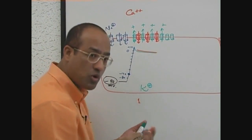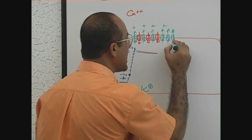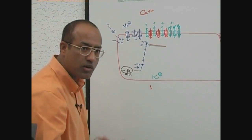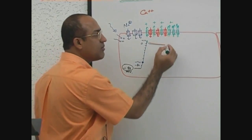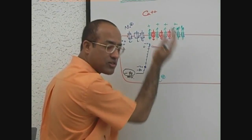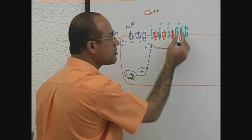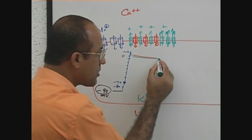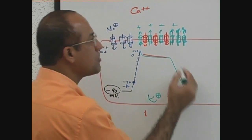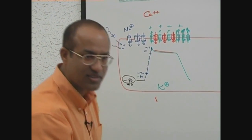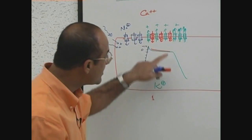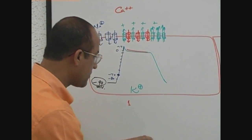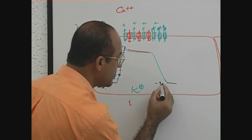Because potassium channels have become more active, potassium losses become very heavy. There is a heavy potassium efflux, and as more and more potassium is going out, more and more positive charges are going out. The cell will start developing electronegativity again because it is losing the positive potassium. When potassium keeps on moving out, the cell becomes progressively electronegative until the membrane potential again becomes the resting membrane potential value of minus 90 mV.